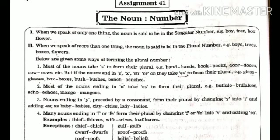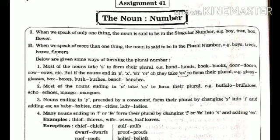But if the nouns end in s, x, sh, o, or ch, they take 'es' to form their plural. So you can see in your book: s, x, sh, o, ch endings take 'es'. For example: glass → glasses (ends in s), box → boxes (ends in x), bus → busses (ends in s), bench → benches (ends in ch). So 'es' is added to the end.